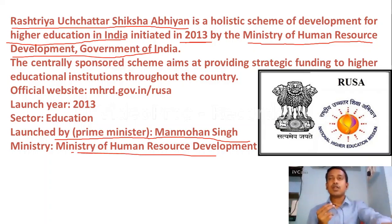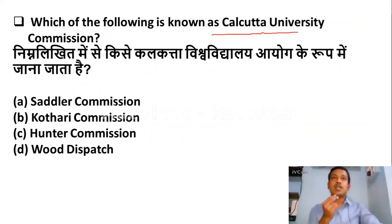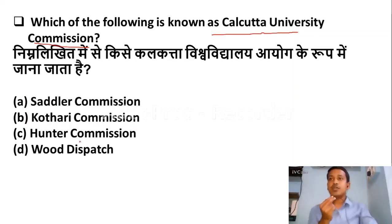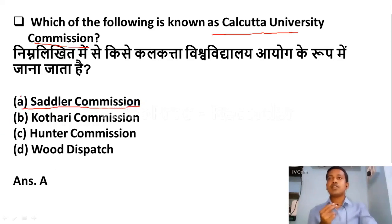Our next question is: which of the following is known as the Calcutta University Commission? Option A: Saddler Commission. Option B: Kothari Commission. Option C: Hunter Commission. Option D: Wood Dispatch. The right answer is Option A — Saddler Commission, which is known as the Calcutta University Commission.